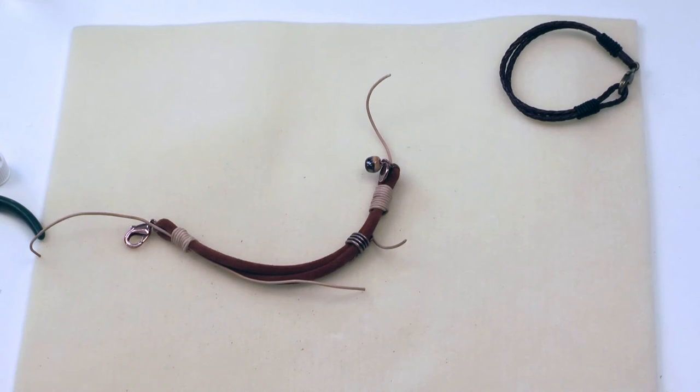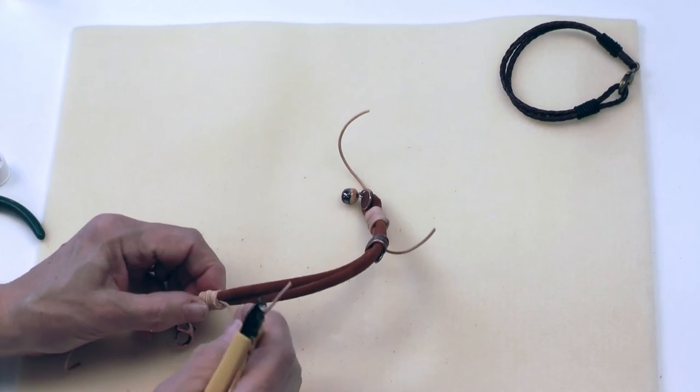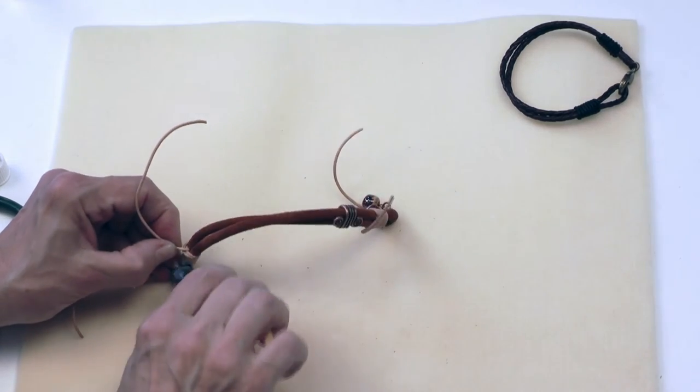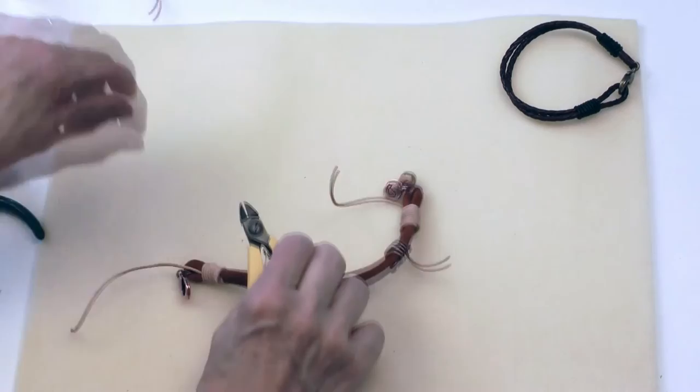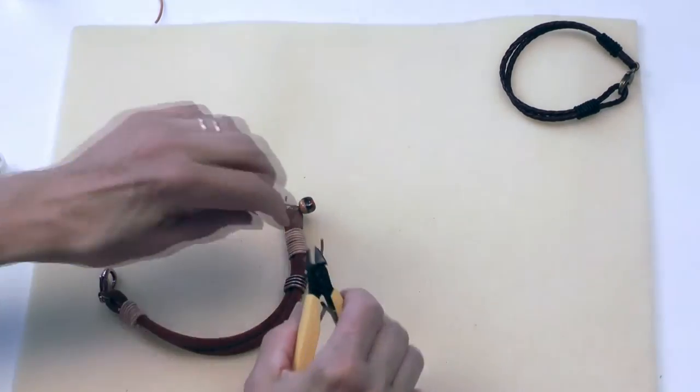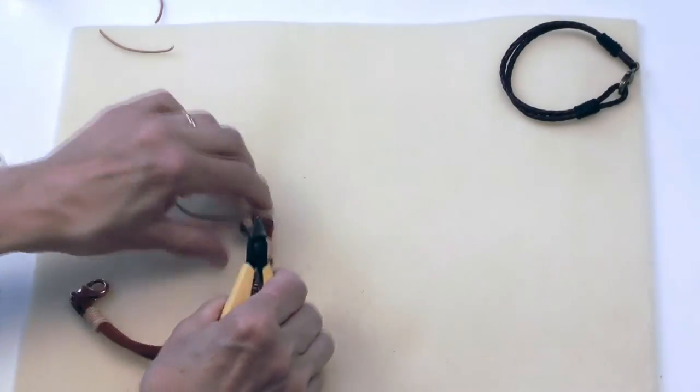So now we'll finish this off. Now this is suede, and so I want to be real careful with my glue that I don't get it onto the suede because it really will show. So I'll go ahead and trim all my tails right flush to where the knot is.